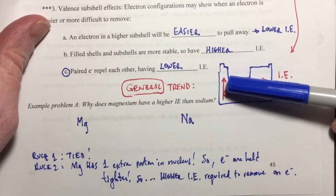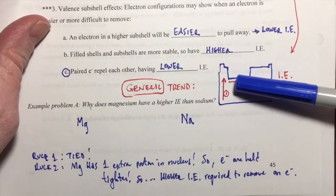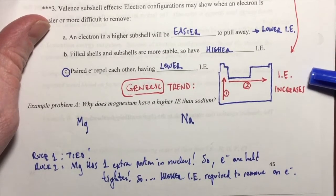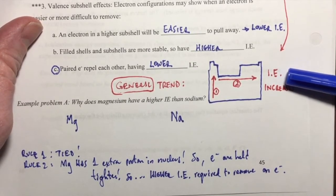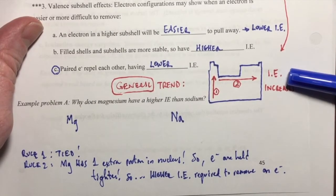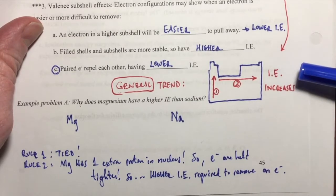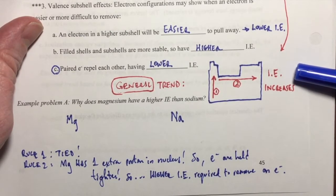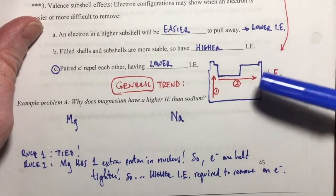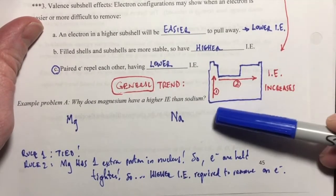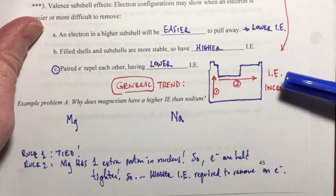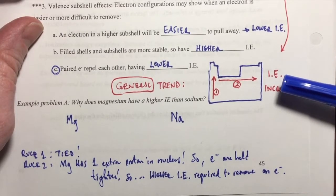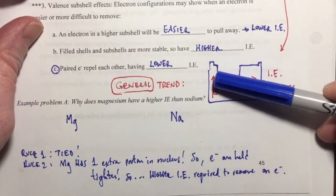According to rule one, and according to rule two, the ionization energy increases as we move to the right across a row, across a period, and that is because we are adding protons to the nucleus. As we increase the number of protons in the nucleus we are increasing the attractive force on those electrons, and therefore it requires greater ionization energy to pull an electron away. So this trend of ionization energy increasing as it goes up and to the right is exactly the reverse of the trend of atomic size, because atomic size gets larger as you go left and down.